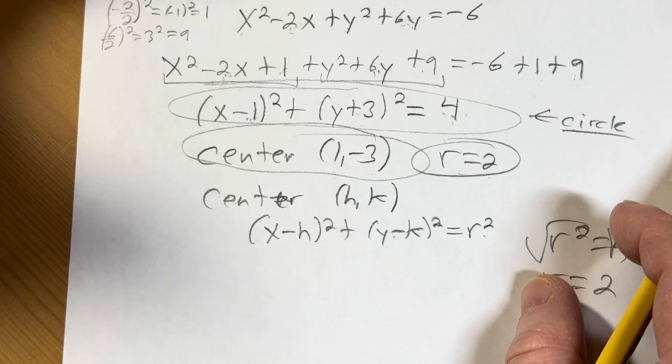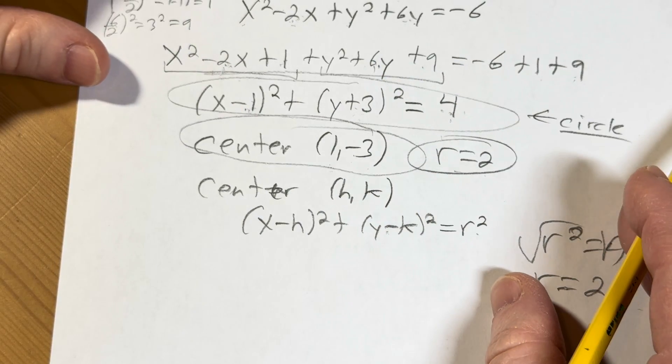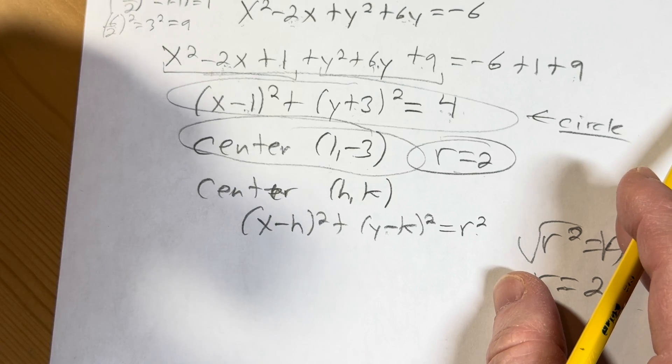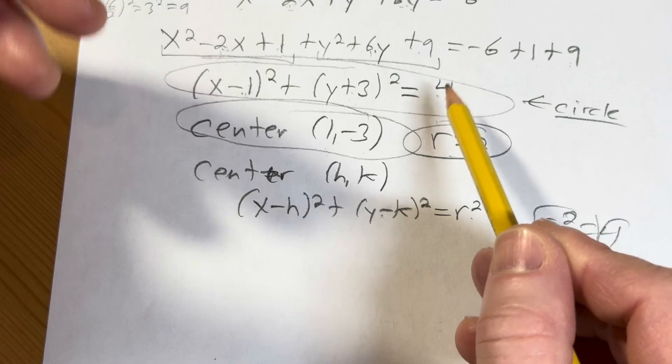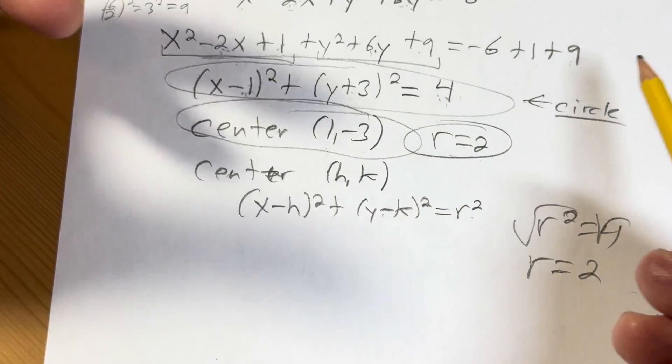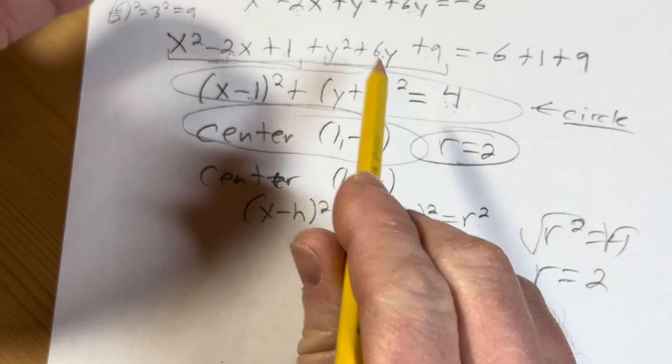Okay, so those are other situations, right? You get a negative number, you know there's no graph. And then the other situation is if there's a zero here, then it's just the graph of a point. But when you have a positive number, then you have a circle. So those are the three cases that you have in this particular situation.